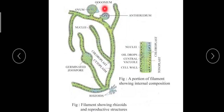Since there are no walls between the cells, all the cells flow as one, and all the nuclei are found in a common protoplasm — making it multi-nucleate. The thallus is therefore branched, filamentous, cylindrical, aseptate, multi-nucleate, and siphonaceous, because the filament looks like a siphon.